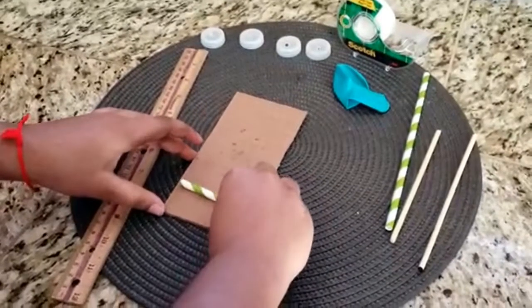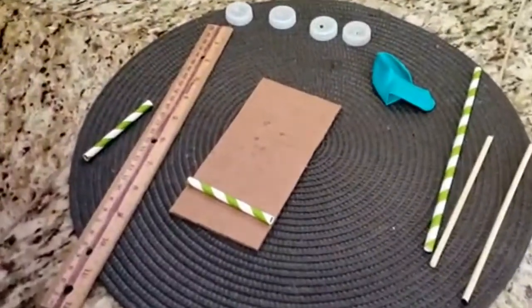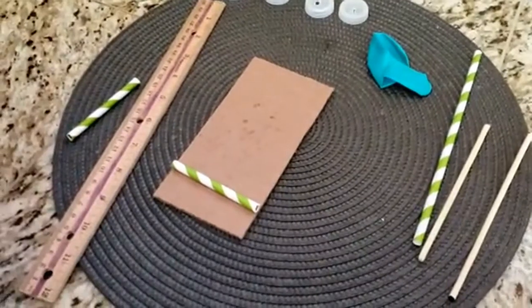Attach them with tape to the cardboard rectangle so that they are parallel to each other and to the short side of the rectangle. These straws will hold the axles.